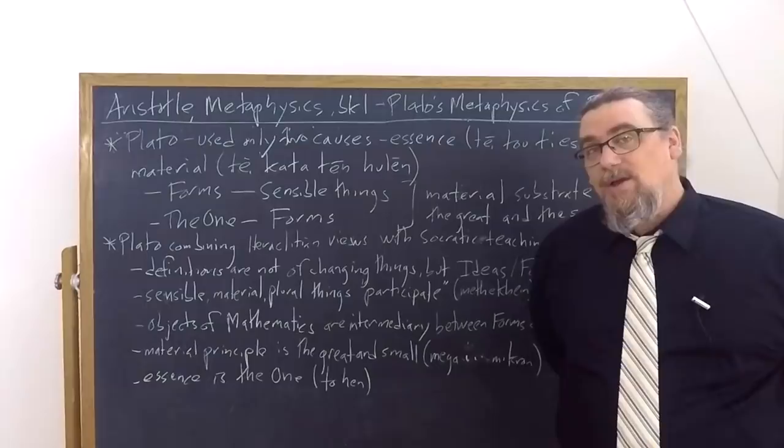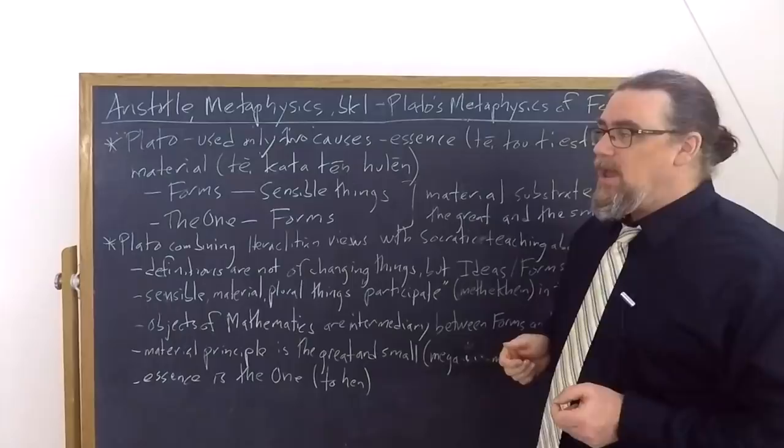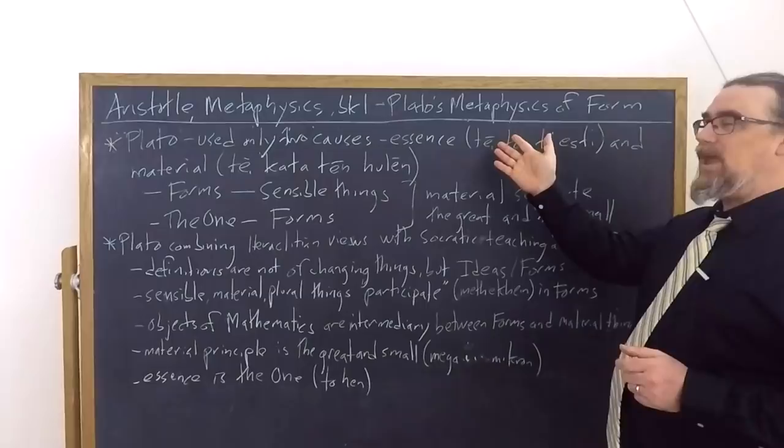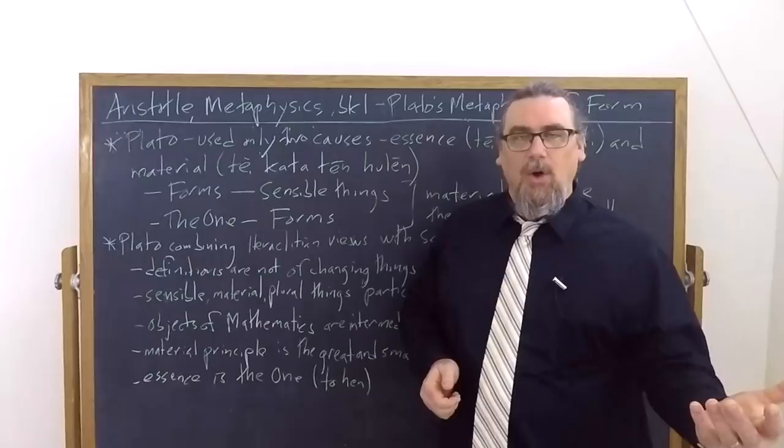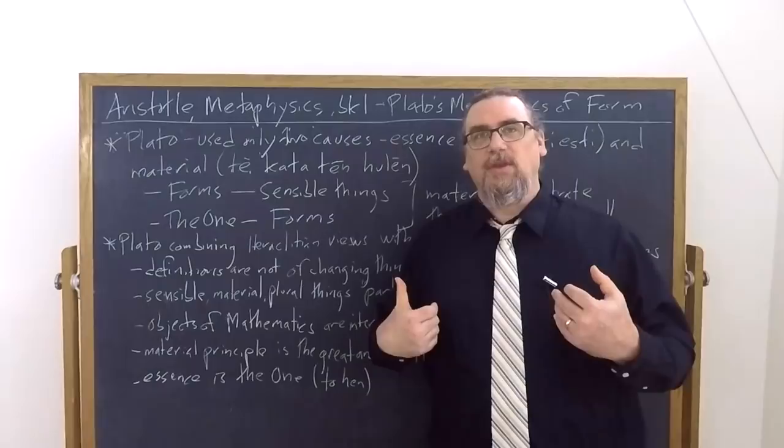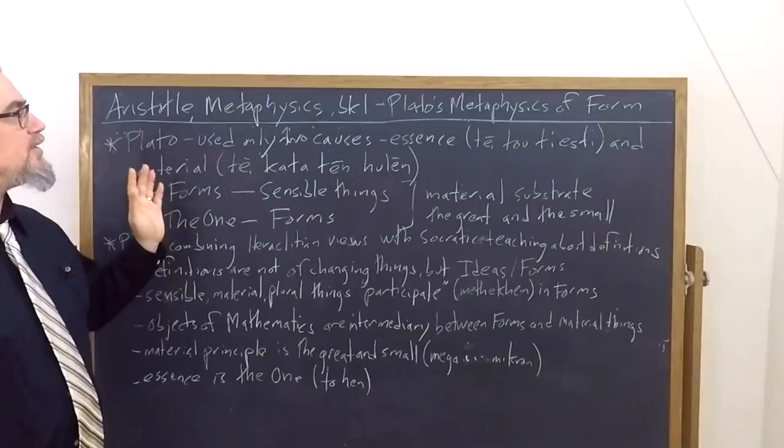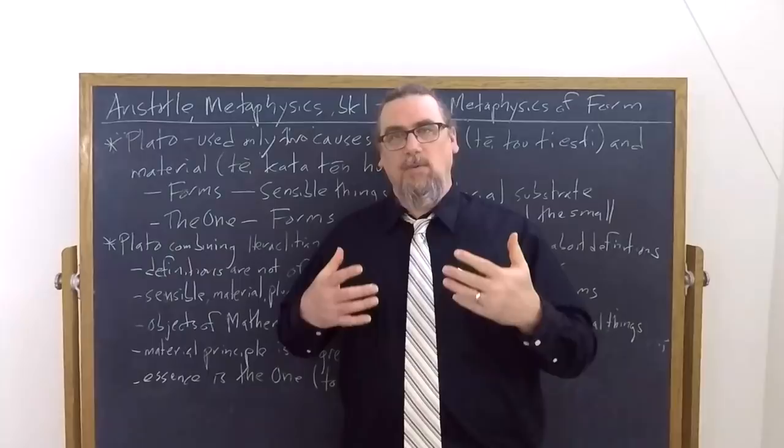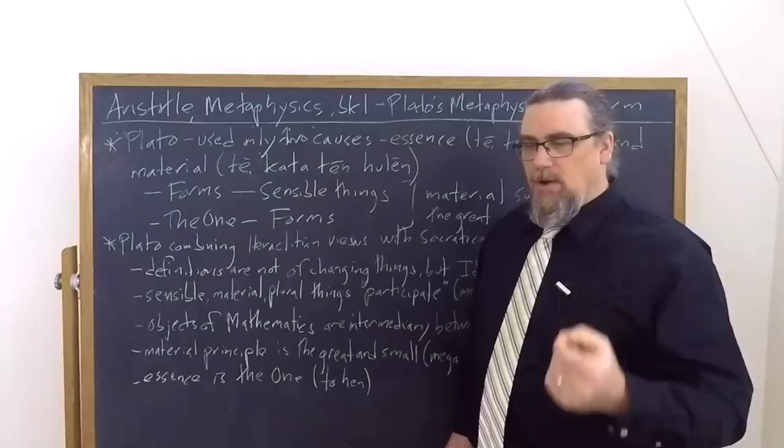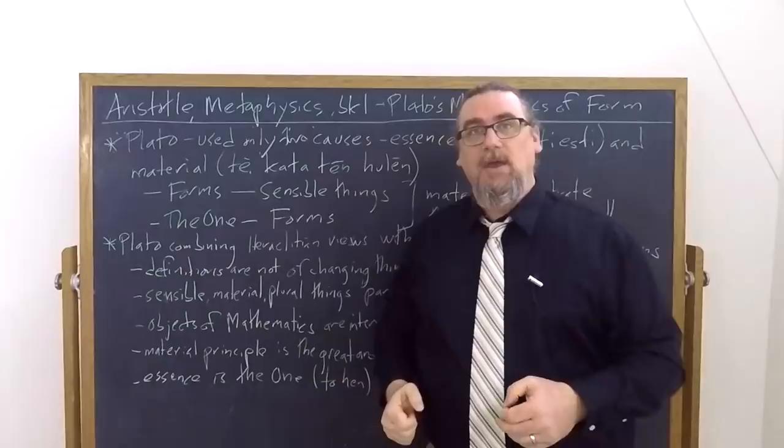What two causes are those? One is the essence, or what we call the formal cause by convention. The locution that he uses is te tu ti esti, the cause belonging to or deriving from what the thing is. So the structure or the form of the thing. And then he also recognizes a material cause, te kata ten hulain. Hulain is the matter - originally wood, but it comes to mean matter in general. And Aristotle identifies this with the substrate, the hupokemenon, that which underlies something. So you have form impressed on matter, and this is what we call a hylomorphic account.